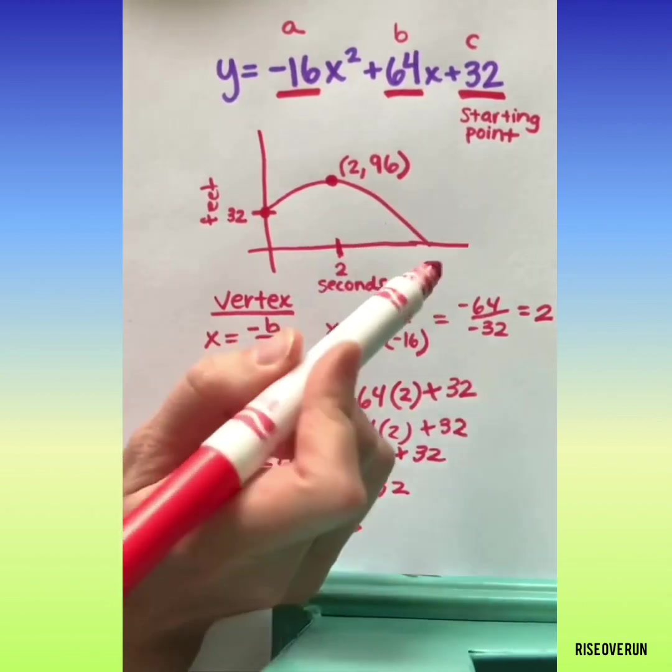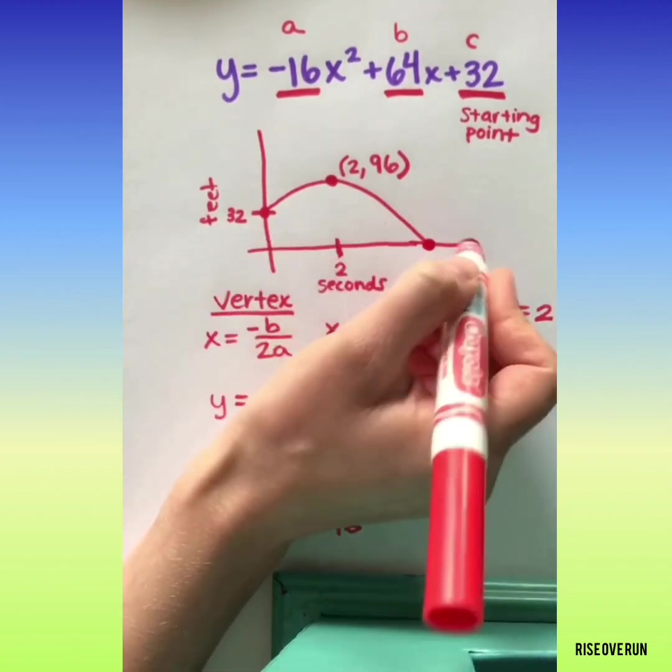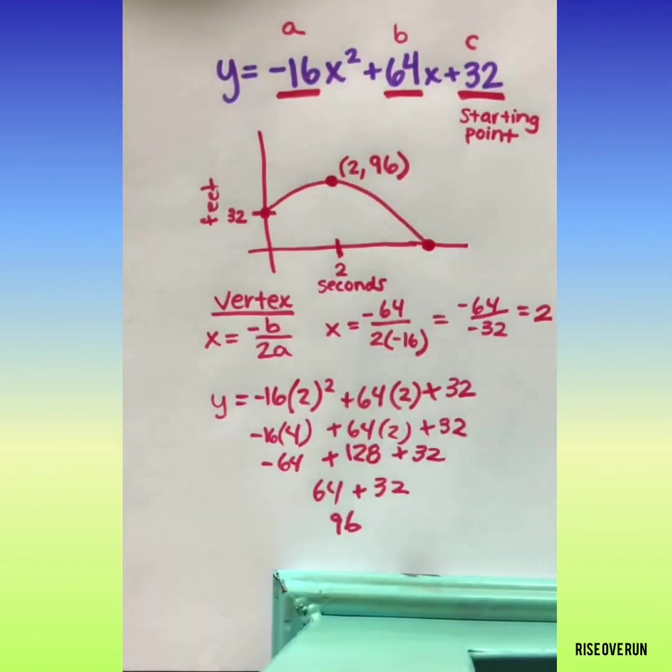Or if I want to know when the ball hits the ground, that's an x intercept, so I can plug in a 0 for y. Let's do that.